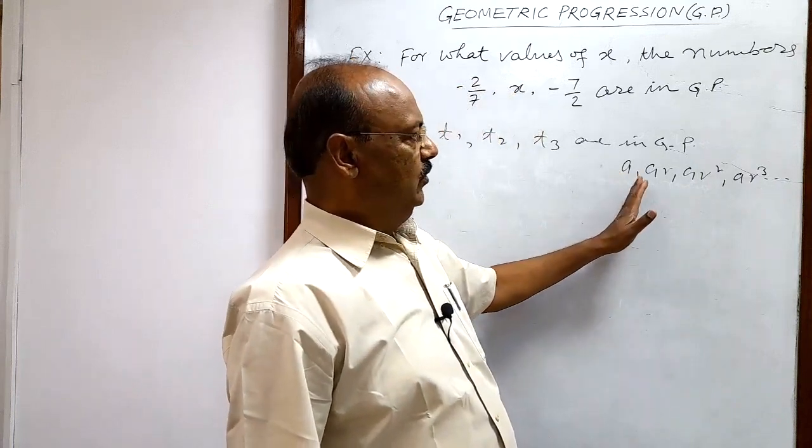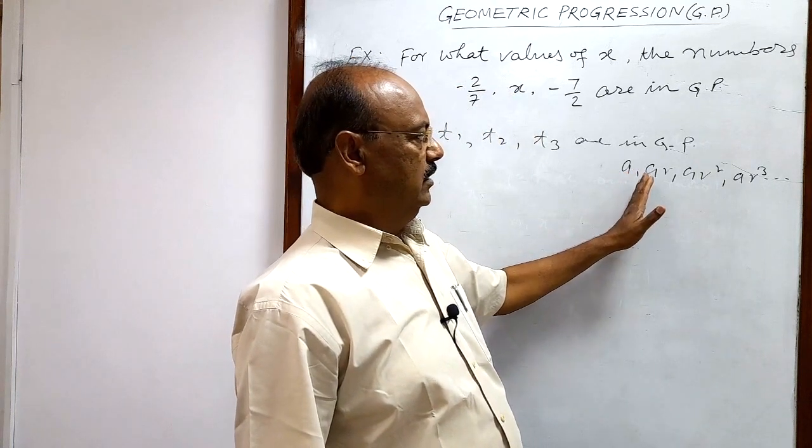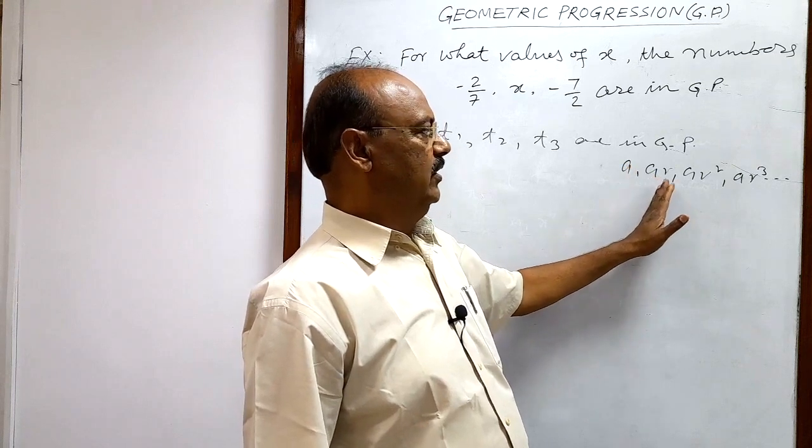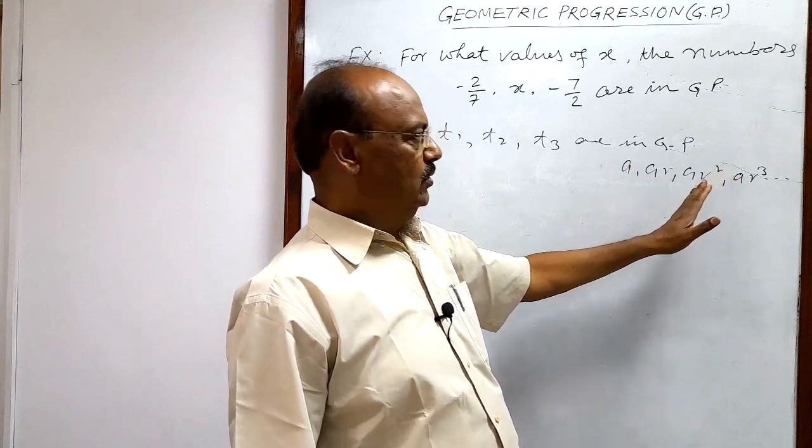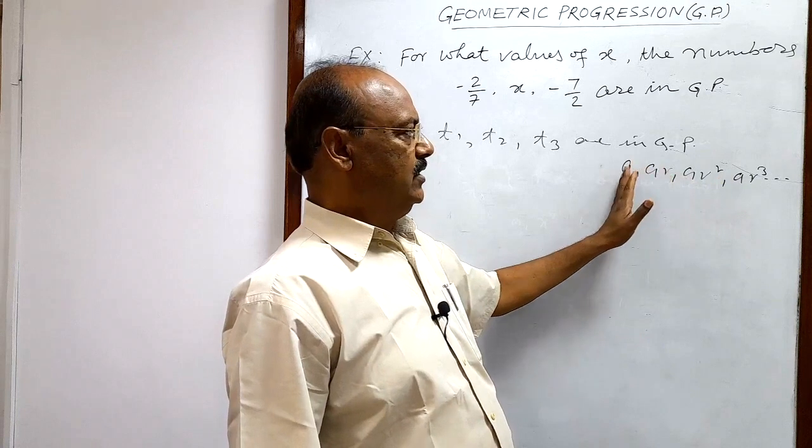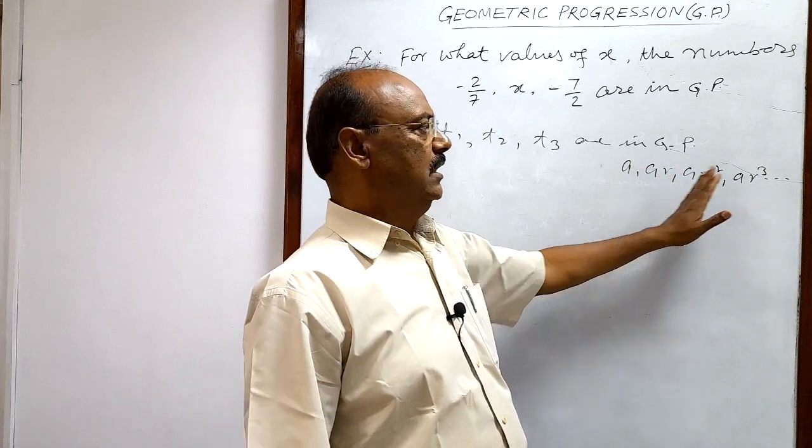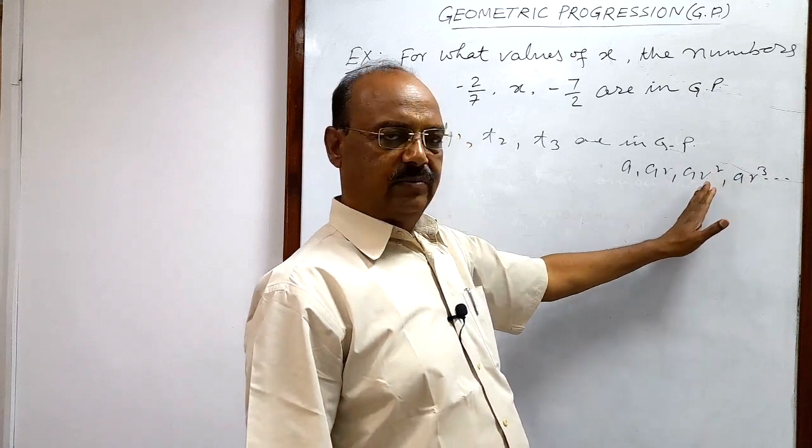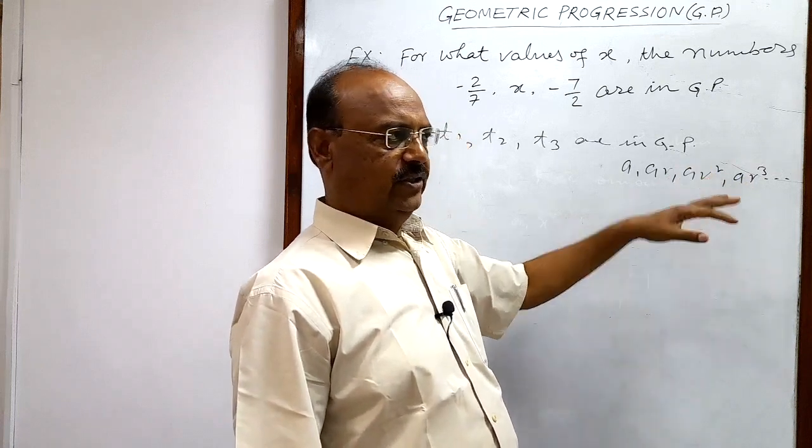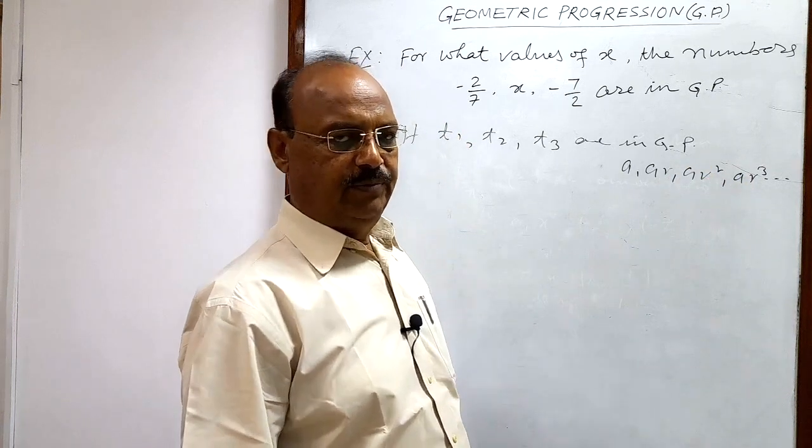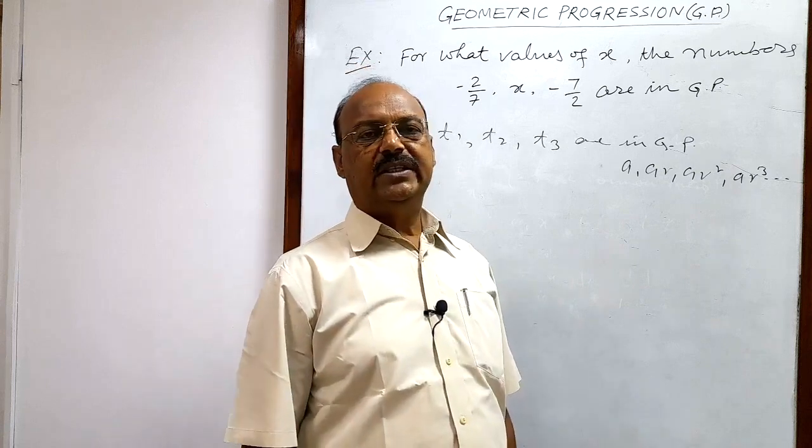Each time this term is being multiplied with the common ratio. So second term by first term is equal to third term by second term is equal to fourth term by third term, like that, because that ratio should always be common in GP, and that ratio is known as common ratio.